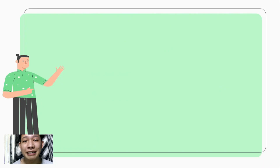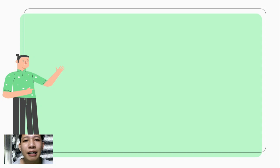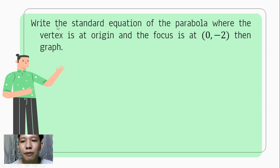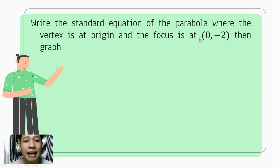Alright, so let us have an example wherein we are going to apply the standard form of the equation of the parabola wherein the vertex is at the origin. What we are going to do is to write the standard equation of the parabola where the vertex is at the origin and the focus is at (0, negative 2), then we have to graph.